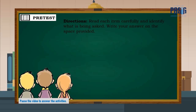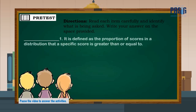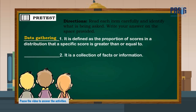To measure your prior knowledge about the lesson, let us answer the pre-test. Directions: read each item carefully and identify what is being asked. Write your answer on the space provided. Number one: it is defined as the proportion of scores in a distribution that a specific score is greater than or equal to. The answer is data gathering.